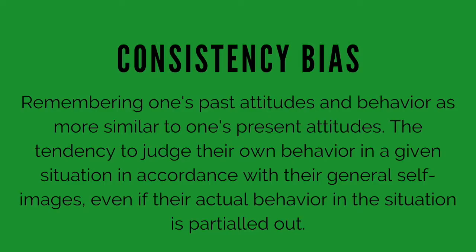The last category I'm going to talk about today are biases that affect memory. First up, the consistency bias, which is remembering one's past attitudes and behavior as more similar to one's present attitudes. The idea that you've always liked vegetables, even though when you were a child you refused to eat them. These memory biases happen because our mind and our memory tend to recall the good and suppress the bad, and they also tend to reconstruct the past to make it fit more with the present.